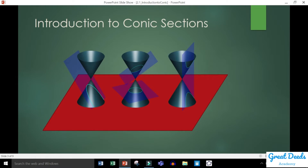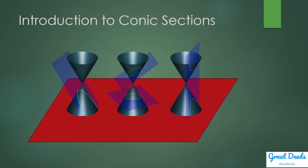Let us now produce the sections of the cone. This is our cone with two nappes, and this is a plane — imagine it as a piece of paper or a blade. We are going to cut our cone in different ways. When we cut one nappe of the cone at a certain angle, the intersection between the cone and the plane is a curve, and the shape of that curve is a parabola.